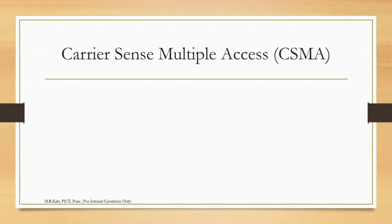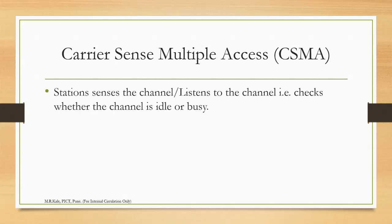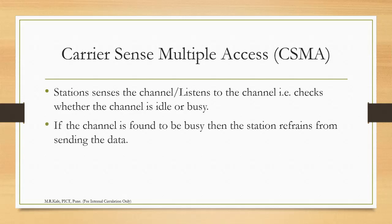There is a technique introduced known as Carrier Sense Multiple Access. As its name suggests, the carrier or the channel will be sensed by the stations before taking the decision of sending the data. The station senses the channel — it checks whether the channel is idle or busy. If the channel is found to be busy, the station refrains from sending. If it is found to be idle, then depending on the protocol, it will take further actions.